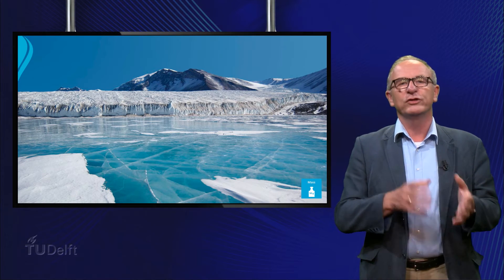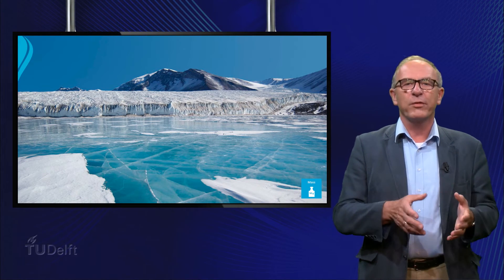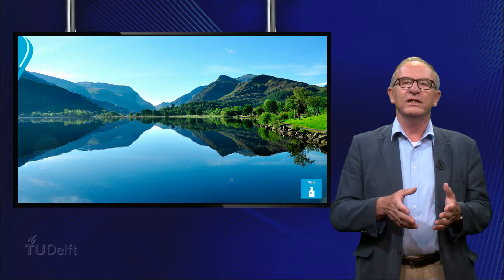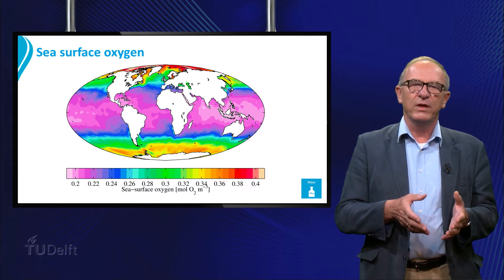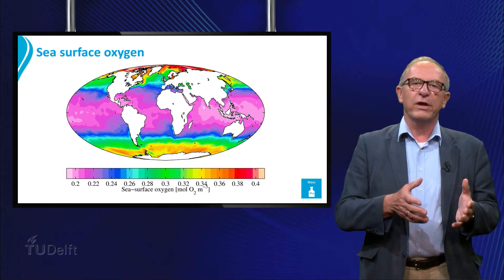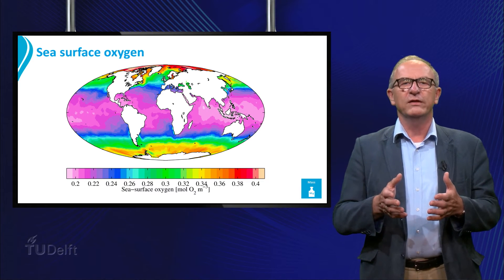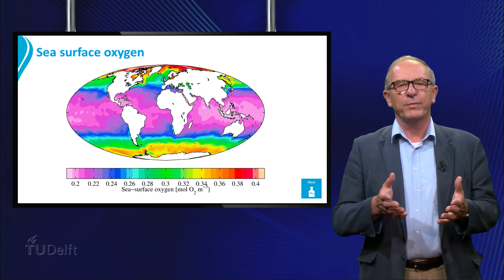In cold areas more oxygen dissolves in water than in warmer areas. This is illustrated in the following picture, where you can see that the polar areas have more oxygen in their sea surface than the tropics.